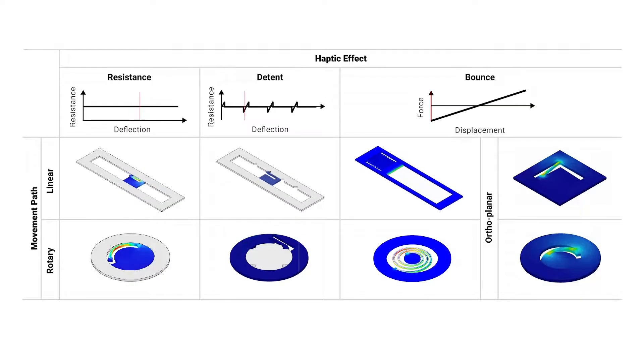Now, we'd like to introduce eight primitive modules, including linear resistance, linear detent, linear bounce, rotary resistance, rotary detent, and rotary bounce modules, and two outer planar linear bounce modules in square and round shapes.